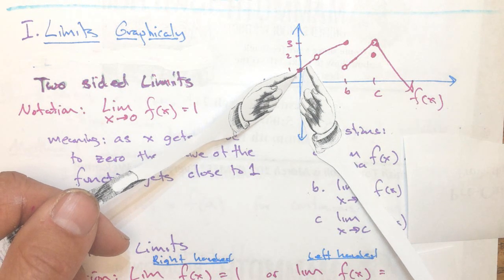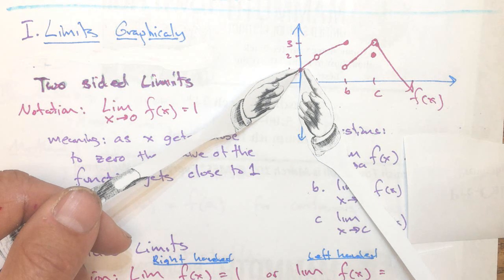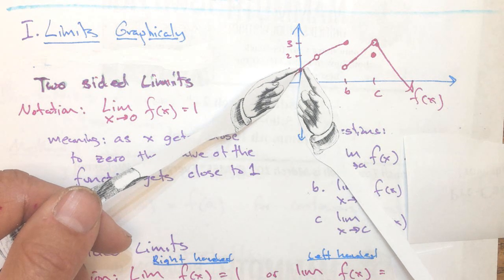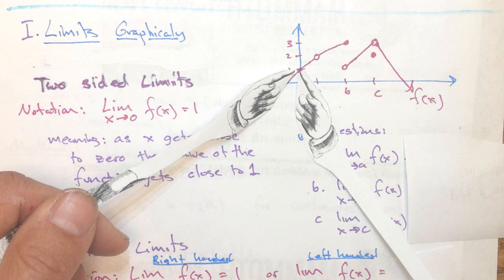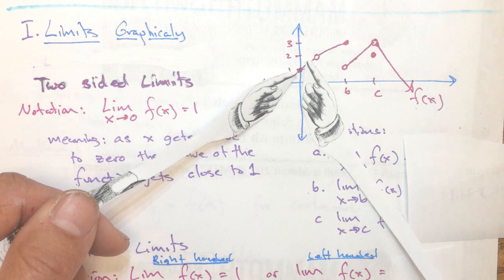Are the two sides getting closer to the same thing? In other words, do the fingers touch? And if they do, the limit exists. And if not, they don't.